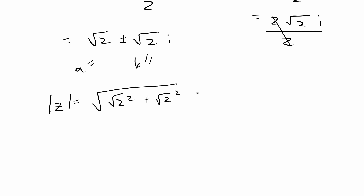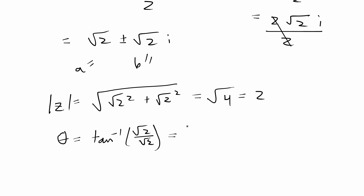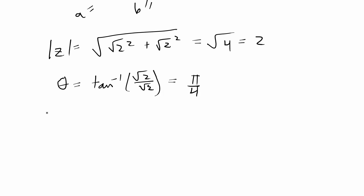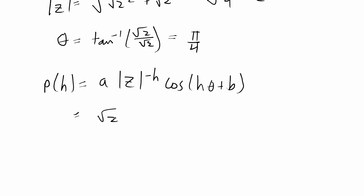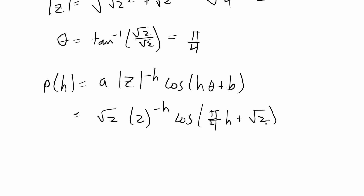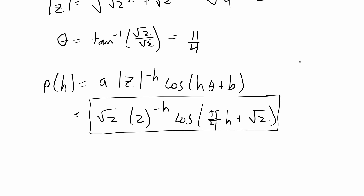The magnitude |z| = √(a² + b²) = √(2 + 2) = √4 = 2. Then theta = tan⁻¹(√2 / √2) = tan⁻¹(1) = π/4. Plugging into the case three formula, rho(h) = a · |z|^(−h) · cos(h·θ) + b = √2 · 2^(−h) · cos(π·h/4) + √2. This is our final answer.